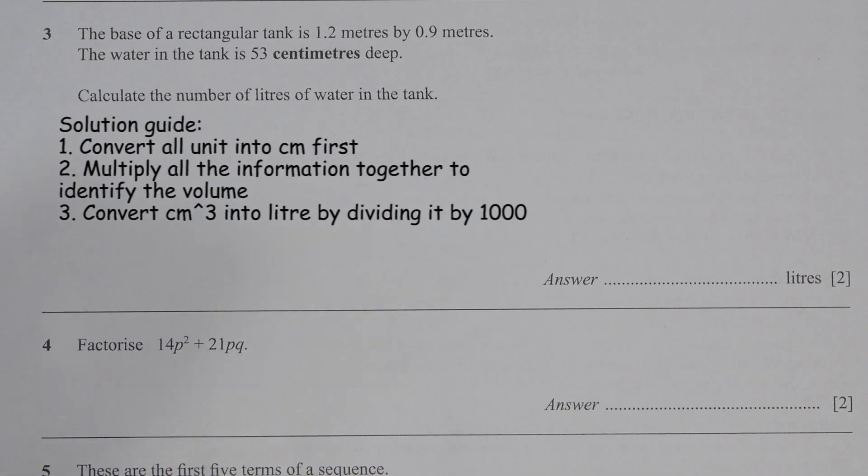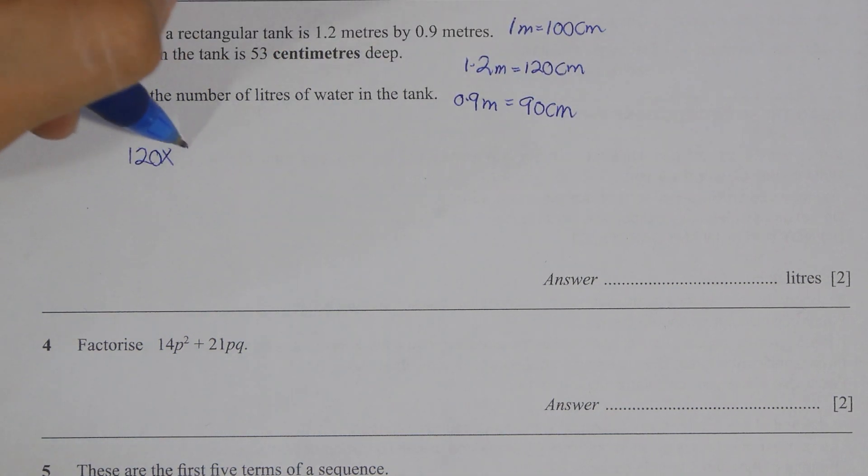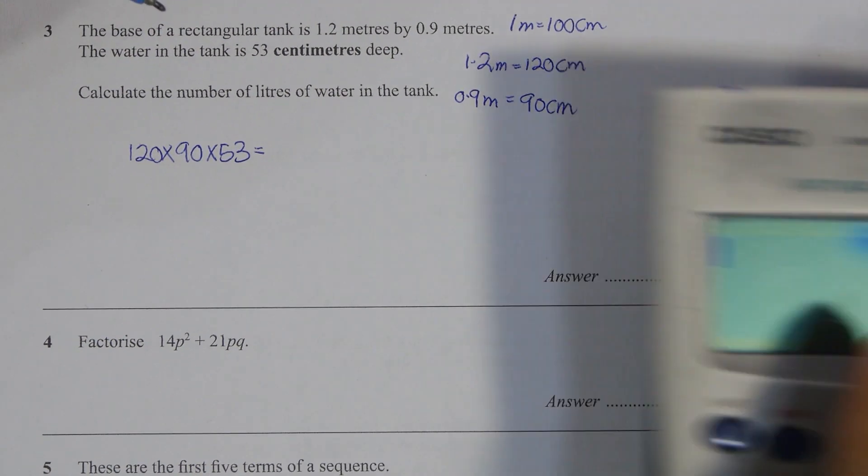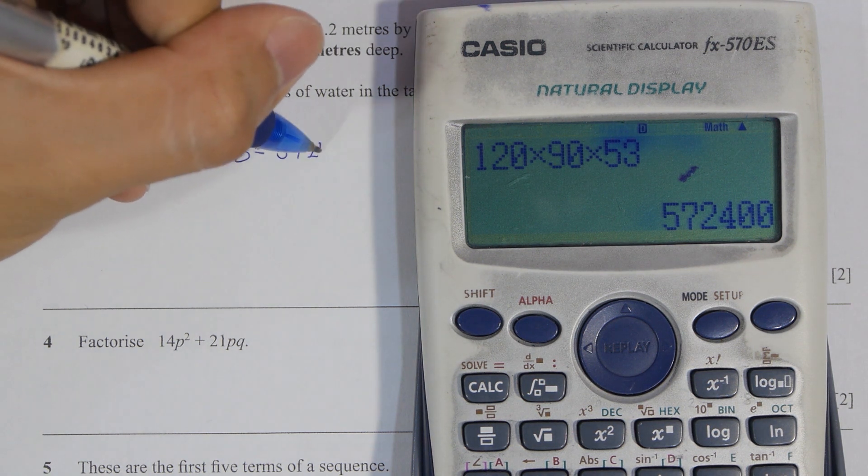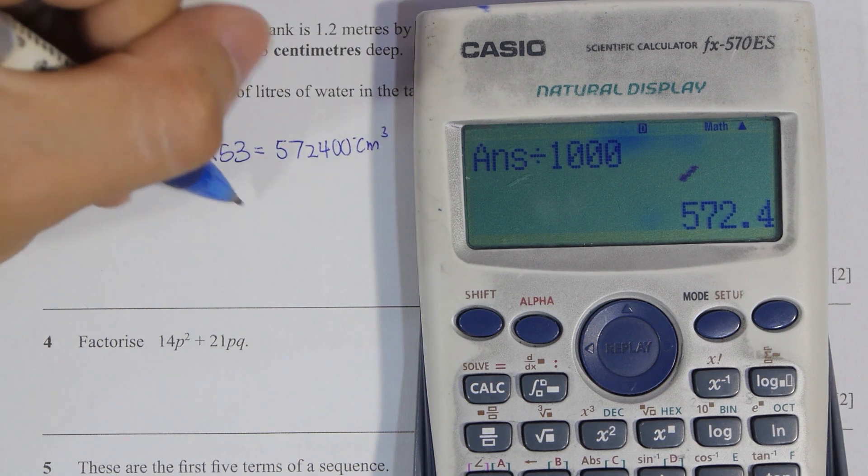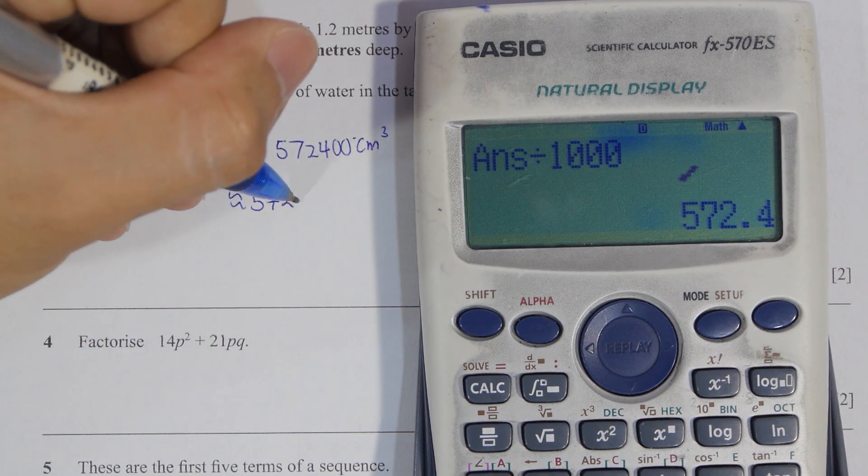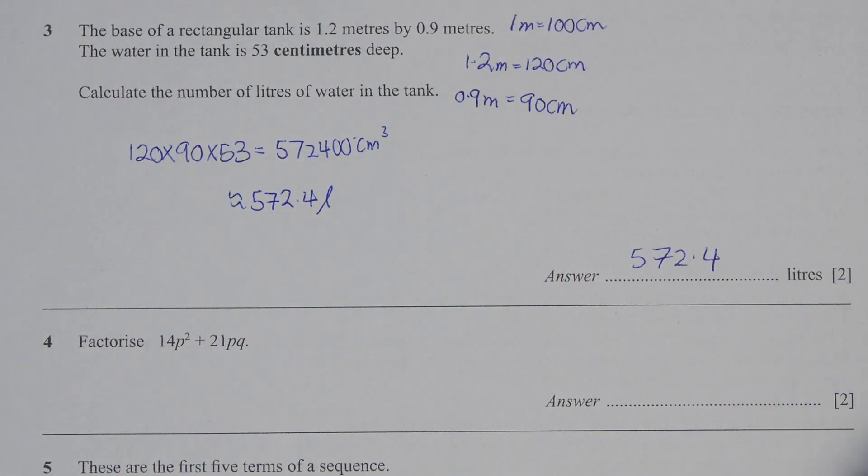For question three, first you need to convert the meter given into CM. So 1.2 meter is actually 120 CM, and 0.9 meter is 90 CM. Then multiply these three variables together, 120, 90 and 53. You will get 572,400 CM cubed. 1000 CM cubed is actually one liter, so after the conversion, we get 572.4 liter.